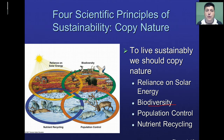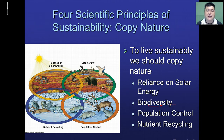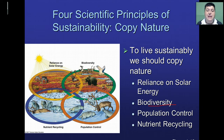Another principle is population control. In nature, living things rarely exceed the maximum number of organisms that can be sustained in a given area, and even if they do exceed that, they're always brought back down to an appropriate level. Humans, because of medicine and technology, have been able to grow exponentially to over seven billion people. Should we think about ways to manage our population so that we're not consuming too many resources?